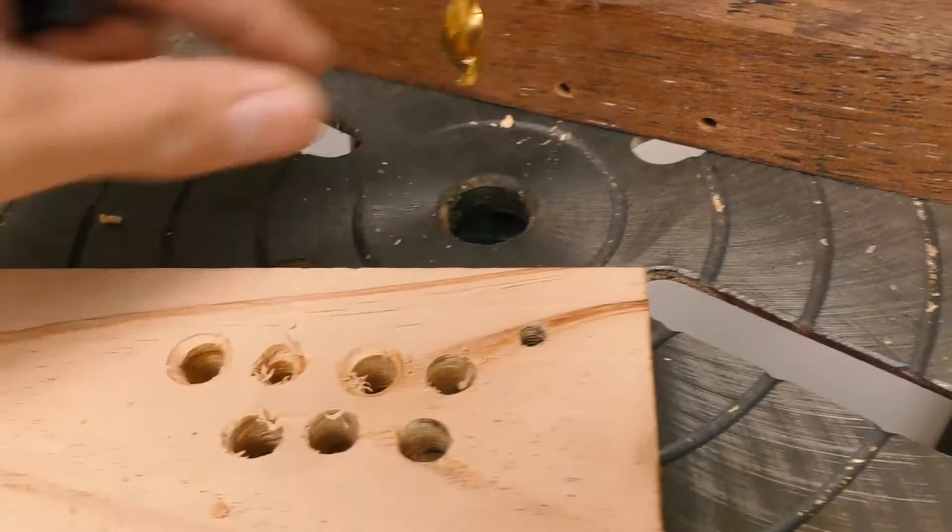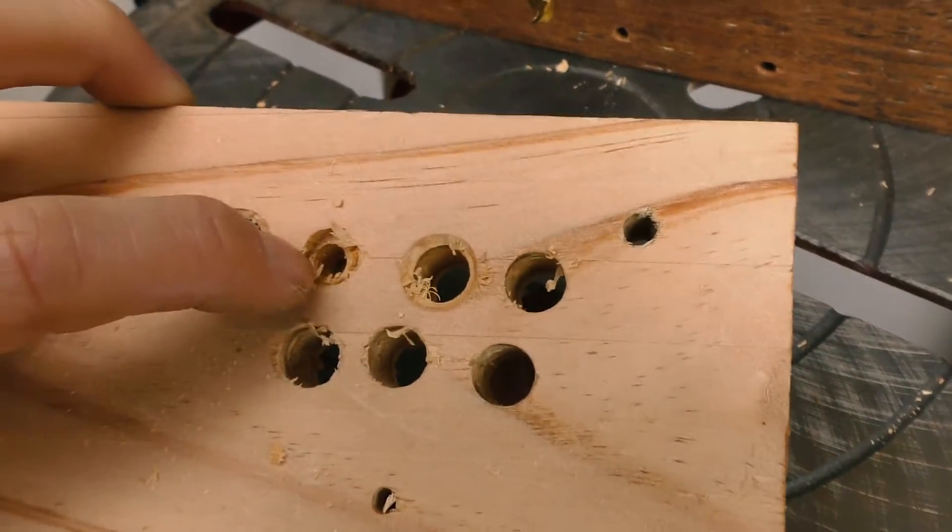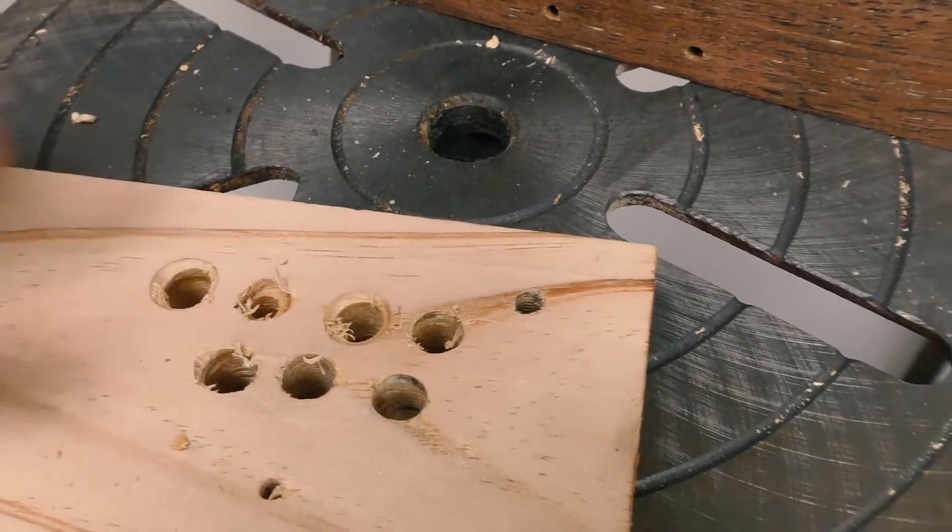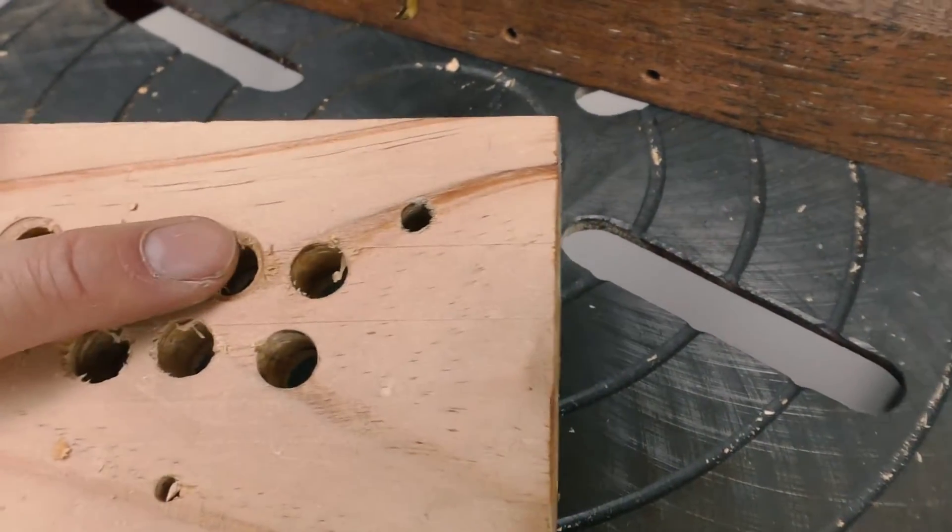These Forstner bits tend to drill a little bit off center when enlarging another hole, so I'm going to use a countersink bit to first create a transfer and that should help guide the drill bit directly center in the hole.